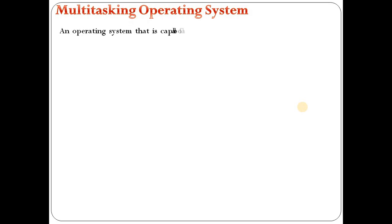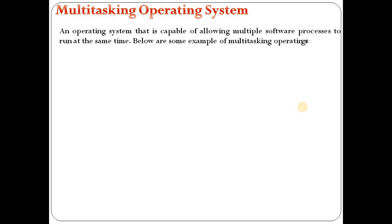Moving on to the multi-tasking operating system — similar to multi-processing, a multi-tasking operating system is capable of allowing multiple software processes to run at the same time. Examples of multi-tasking operating systems include Linux and Microsoft Windows. We can use different types of work at the same time without stopping other work. This is called the multi-tasking operating system, with examples being Linux and Microsoft Windows.